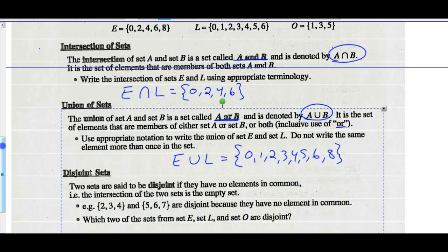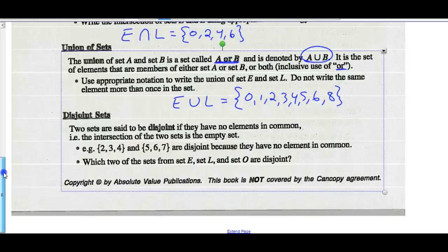Let's look at the intersection of two disjoint sets. Two sets are said to be disjoint if they have no elements in common. The intersection of two disjoint sets is the empty set. For example, the set {2, 3, 4} and the set {5, 6, 7} are disjoint because they have no elements in common.